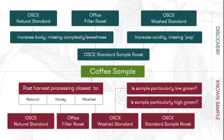Fundamentally, Natural Standard, across Filter Roast, across Washed Standard, across Standard Sample Roast — they effectively decrease in length and increase in heat and heat transfer as you go across.